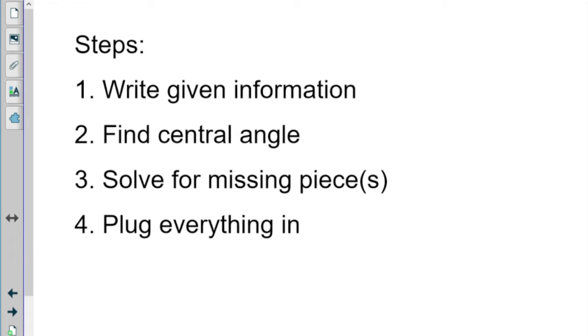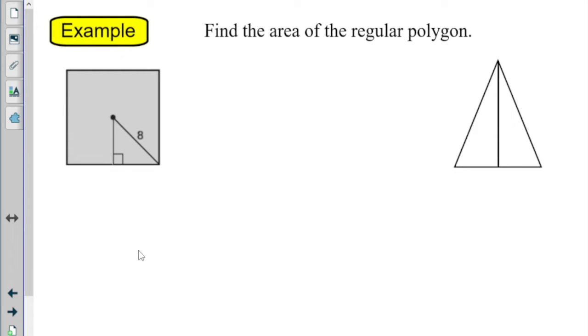Step two, find the central angle. Remember that's going to be 360 divided by number of sides, and then we usually split that in half. Step three, you're going to solve for the missing pieces. Usually that involves some trig. And then step four, plug it all in to the one-half A S N formula. All right, let's do it.